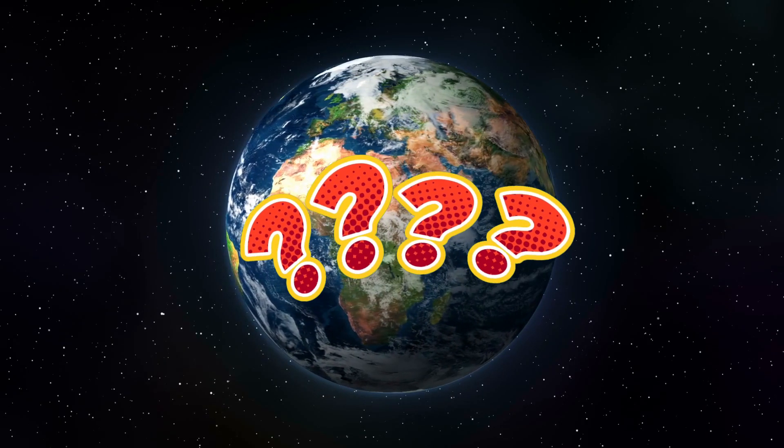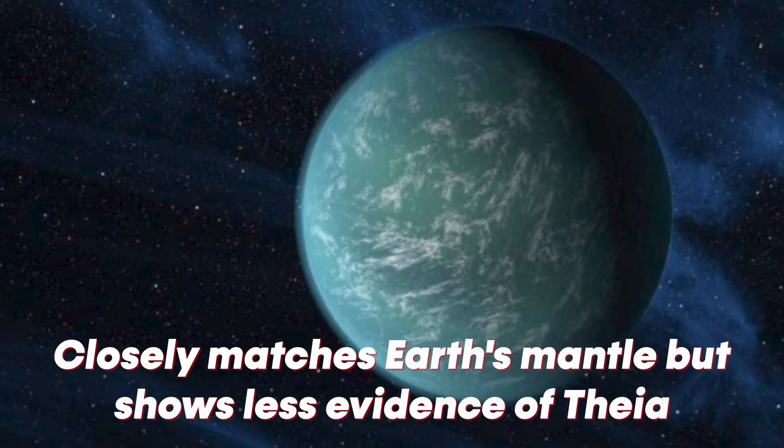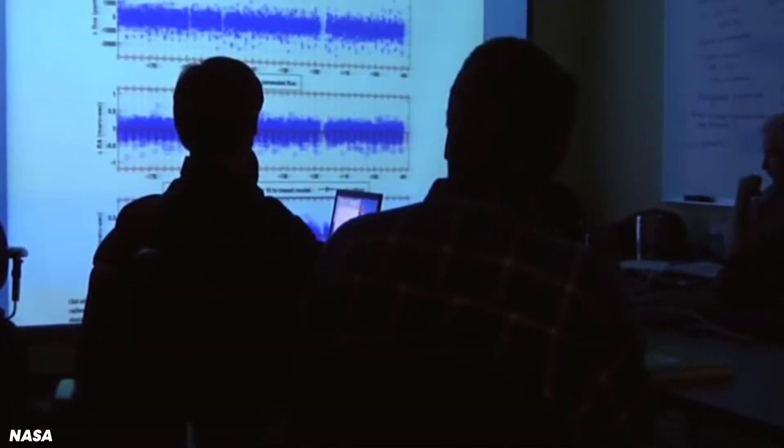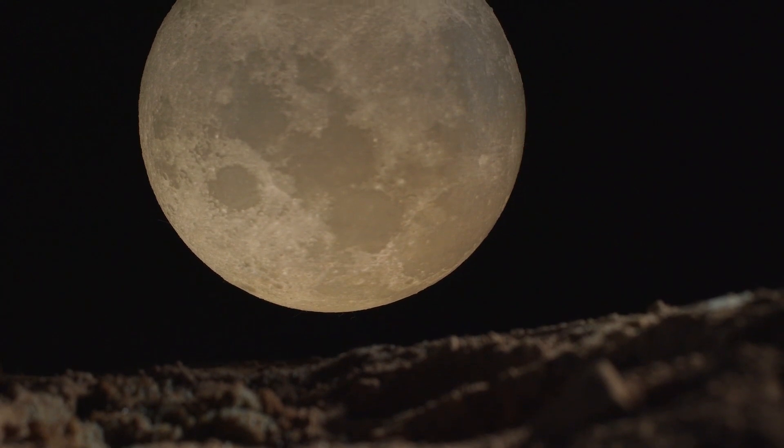This theory explains many aspects of the Moon's composition and its gravitational interaction with Earth. However, it also raises questions, such as why the Moon's composition closely matches Earth's mantle but shows less evidence of Thea. Various refinements to this hypothesis are being explored to address these issues, including the possibility of a more violent impact or a faster spinning early Earth.